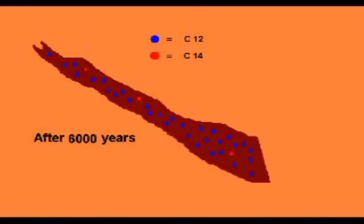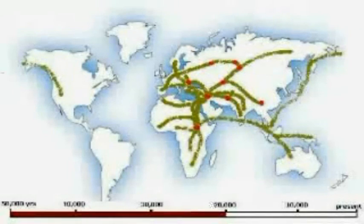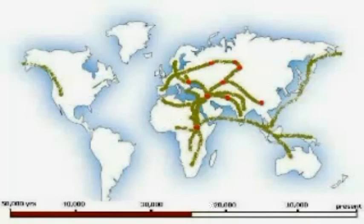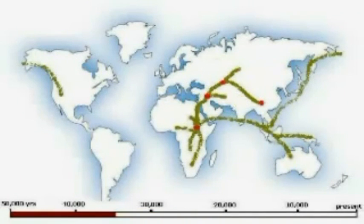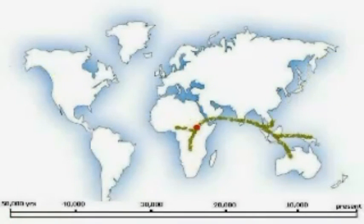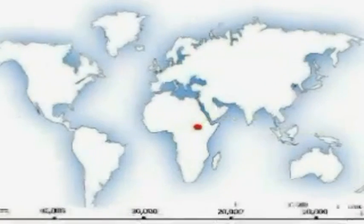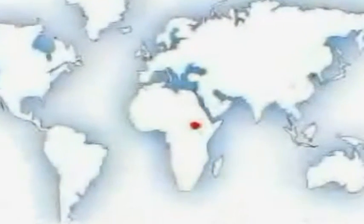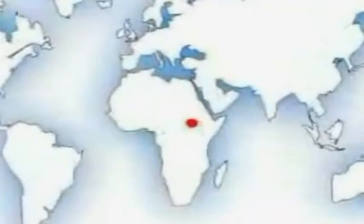Now that we've got carbon dating out of the way, let's quickly run through a few more absolute dating methods. Biologists know that human DNA mutates at a fairly regular rate, and they can trace these mutations back like following the branches of a tree back to the trunk. It's not a greatly accurate method, but it does give a rough idea of when humans migrated, and a very definite idea of where — Africa, around 50,000 years ago, just as other dating methods suggested.